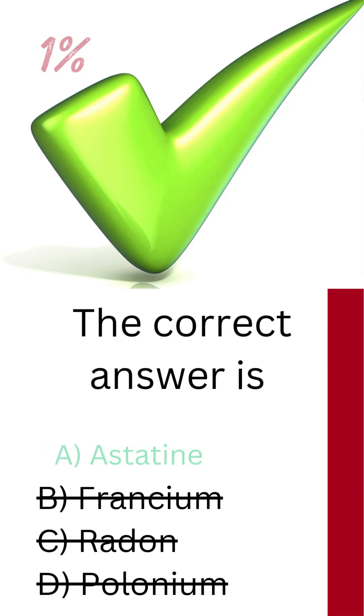The correct answer is Astatine. Astatine is the rarest naturally occurring element on Earth, with less than a gram estimated to exist at any given time. It forms only briefly during radioactive decay, before breaking down almost immediately, making it so rare that most people will never encounter it outside of theory.